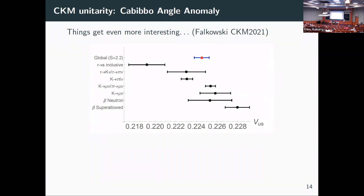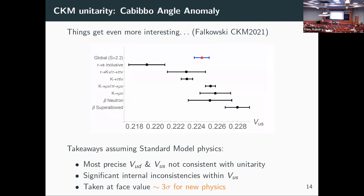The situation got more interesting less than a year ago. There's now another way of getting the Vus number. On the y-axis are different channels for extracting the same number, and none of them line up for a consistent answer — you can make a world average but it has a scale factor of 2.2. So clearly something is wrong. Taking this at face value, the most precise Vud and Vus determinations are not consistent with unitarity, and there are significant internal inconsistencies.